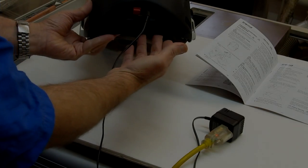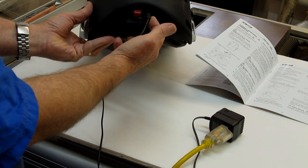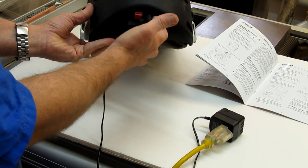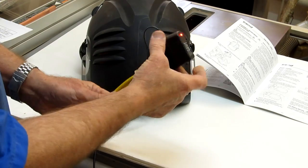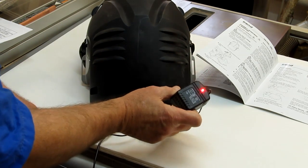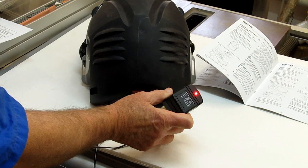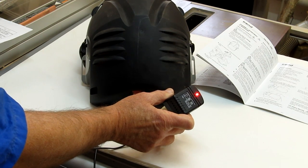As you can see, the charger plugs into the back of the top of the helmet where the battery pack is located and the light's on when it's charging. Unfortunately the light never goes off so it doesn't let you know when it's fully charged.